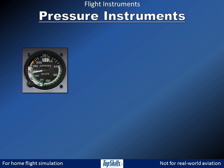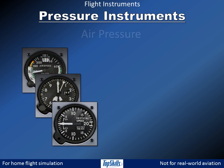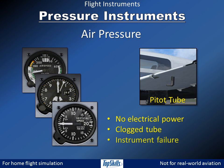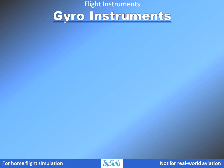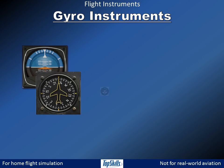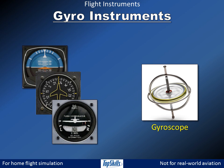The airspeed indicator, altimeter, and vertical speed indicator use air pressure from the pitot tube to produce their readings. They work without electrical power, but if the pitot tube gets clogged, these instruments will produce faulty readings or none at all. The attitude indicator, heading indicator, and turn and bank coordinator use gyroscopes to produce their readings. They work only with electrical power.